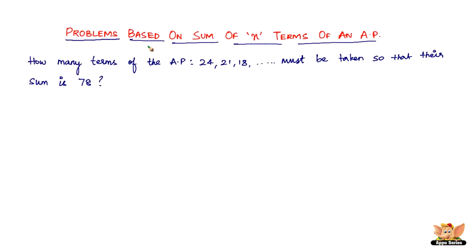In this video, let us continue to solve problems based on sum of n terms of an AP. We've got a question here: how many terms of the AP 24, 21, 18 must be taken so that their sum is 78?